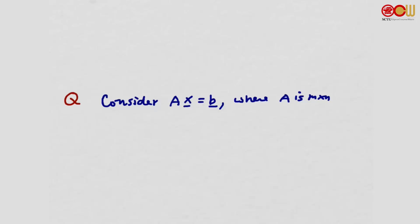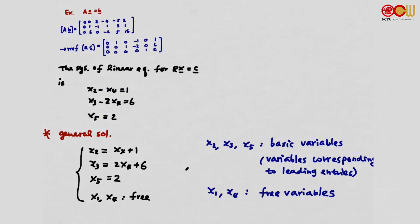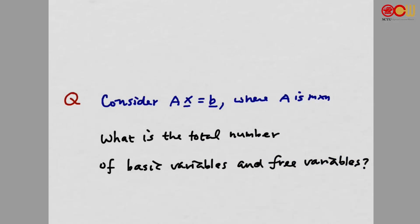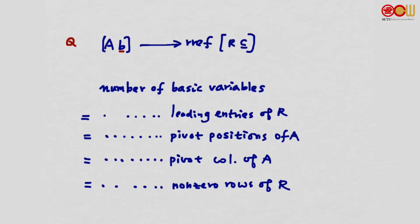Consider the system Ax = b where A is an m by n matrix. What is the total number of variables — basic variables plus free variables? Looking at the example: basic variables correspond to leading entries, and the rest are free variables. The total number of variables is n, and the number of free variables is n minus the number of basic variables. This number is very important.